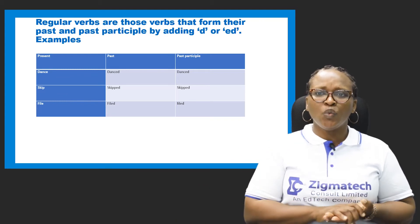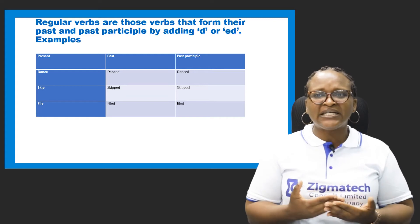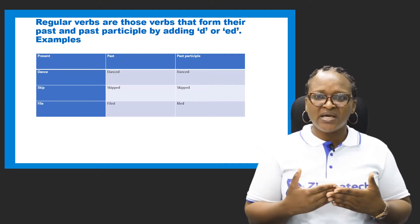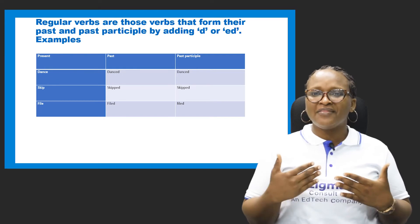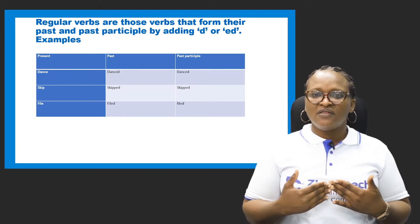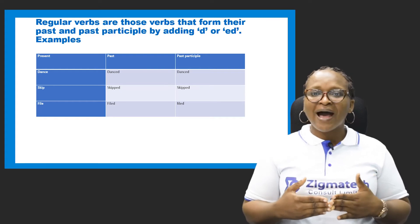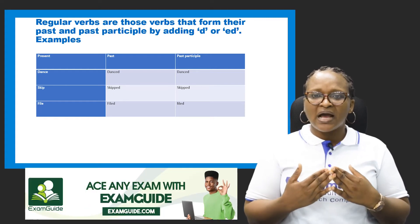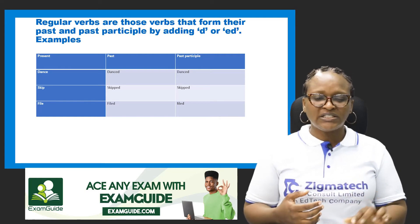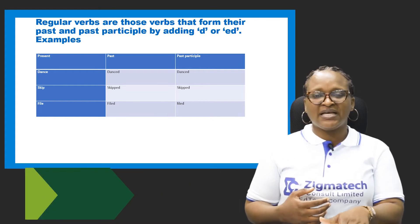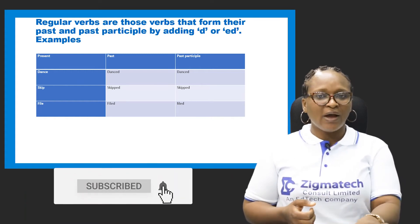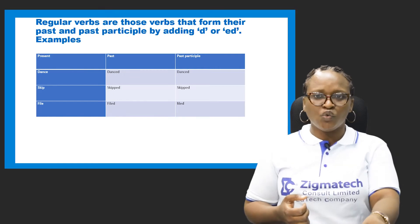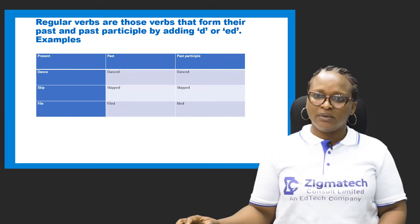Looking at the word 'skip,' we add 'ed' because the word ends with a consonant, p. The word 'file' has 'e' ending it, so if you want to form the past and past participle it becomes 'filed.' If someone tells you to file some information, that's a verb — an action you carry out. When you've done it, you say 'I filed the book' — that's the past and past participle.